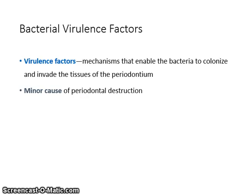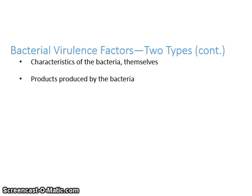Virulence factors are the mechanisms that enable the bacteria to colonize and invade the tissue of the periodontium. This is a minor cause of periodontal destruction. There are two types of bacterial virulence factors: the characteristics of the bacteria themselves, as well as products produced by the bacteria.